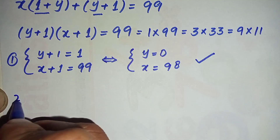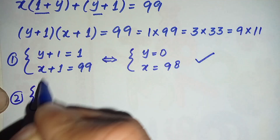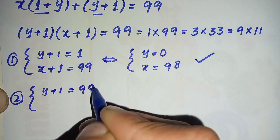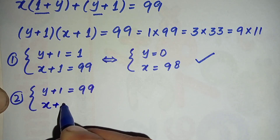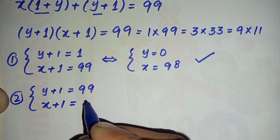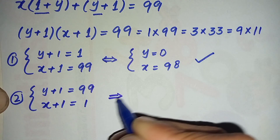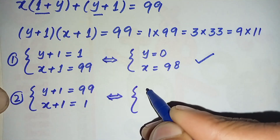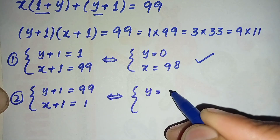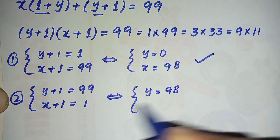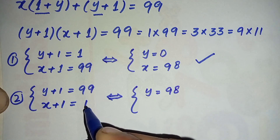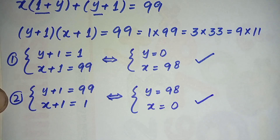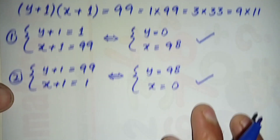For the second pair, we compare (y + 1) = 99 and (x + 1) = 1. So y = 98 and x = 0. This is our second pair of solutions: (x, y) = (0, 98).